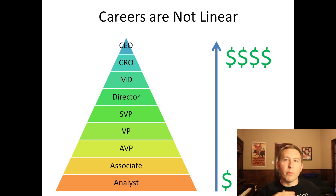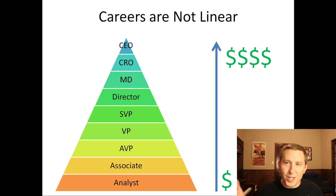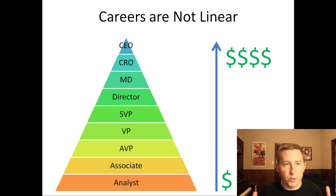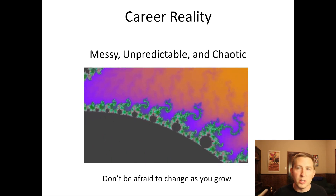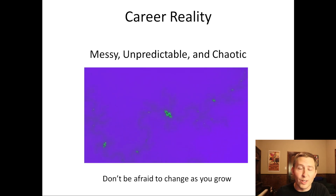One key point is there are multiple firms — global, national, regional, local banks, hedge funds, investing firms, and cryptocurrency. You need to start realizing there are these nets of hierarchy. People move and bounce around between companies. The industry as a whole is not structured like a single firm's org chart. It's not as linear as we like to think.